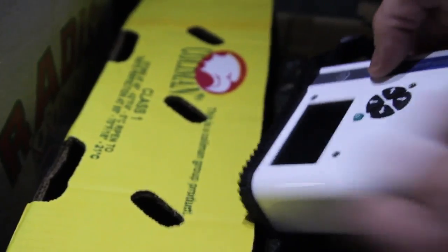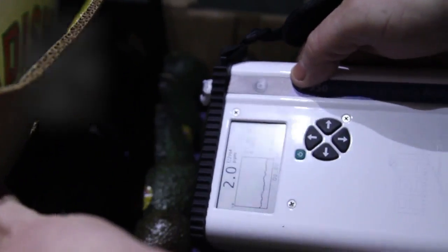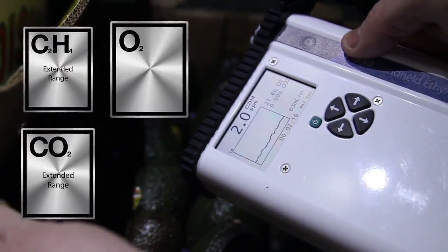Simple to operate and weighing less than 1 kilogram, the F950 records ethylene, carbon dioxide, and oxygen concentrations as well as date, time, relative humidity, and GPS location.